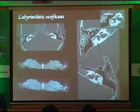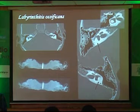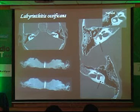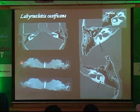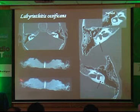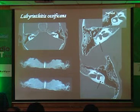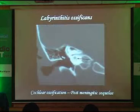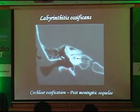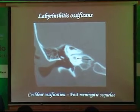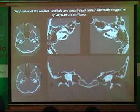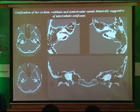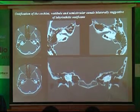The lateral semicircular canal can appear completely ossified, and similarly on the left. On MR 3D imaging it looks amputated, because calcium deposition cannot be seen on MR. In labyrinthitis ossificans the entire cochlea is involved — the commonest cause being post-meningitic sequelae. You see a whitewash — complete ossification; you don't see the vestibule, you don't see the cochlea — almost completely ossified, very classical labyrinthitis ossificans.